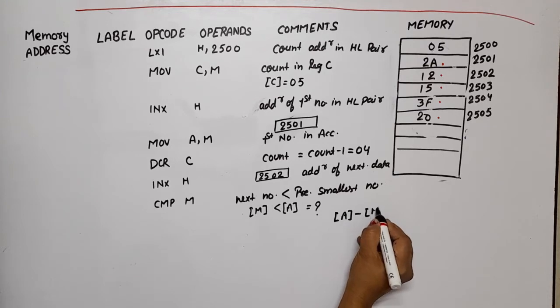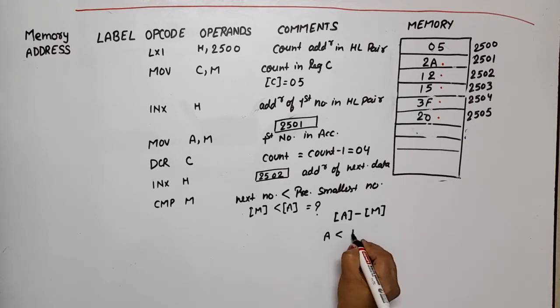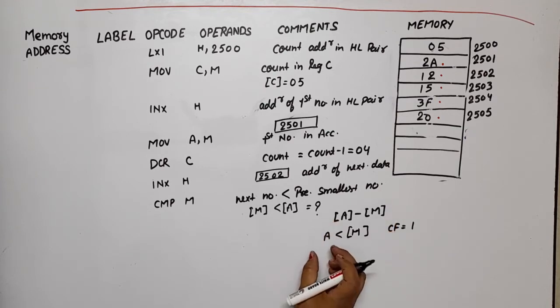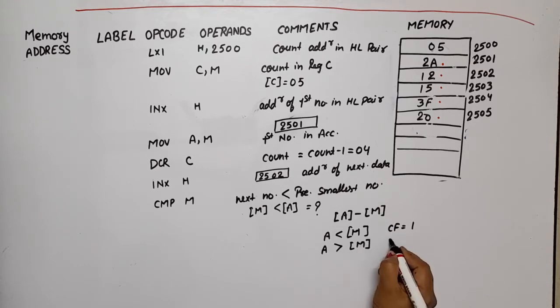This comparison subtracts the memory location content from the accumulator. If the value in A is less than the content of M, then CF will be high because in subtraction we need a borrow if we subtract a larger number from a smaller number. But if the value in A is greater than the content of memory location, then CF will be zero. We need the smallest number in the accumulator.